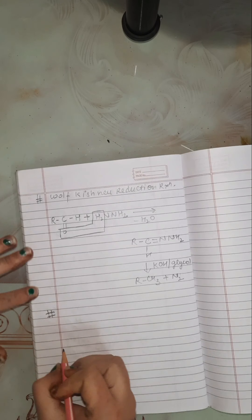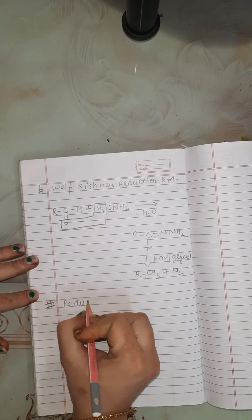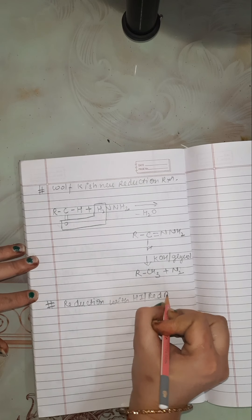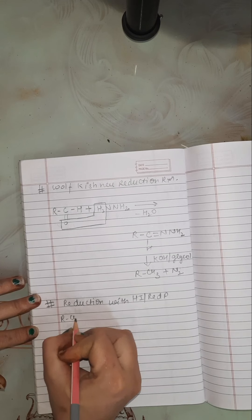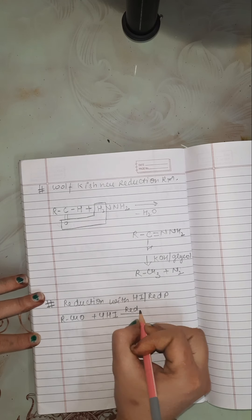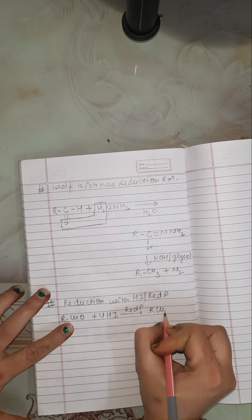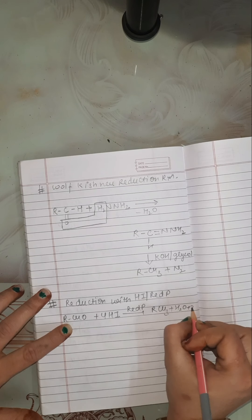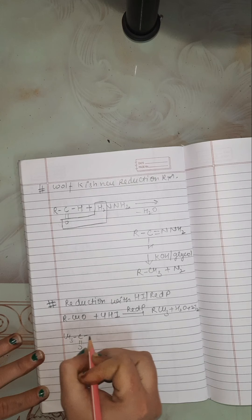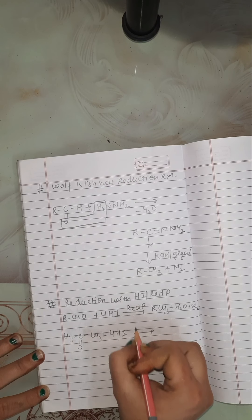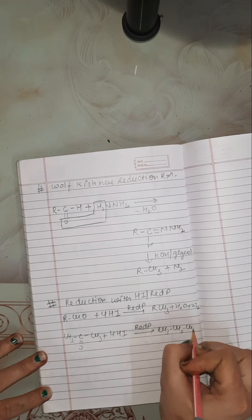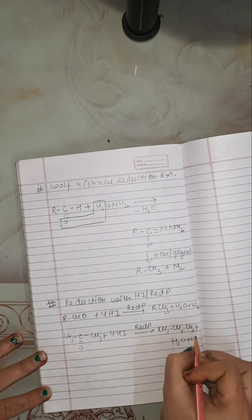Now let us do our next reaction, that is reduction with HI and red phosphorus. Take an aldehyde and react it with 4 molecules of HI in the presence of red phosphorus; it gives RCH3 plus H2O plus 2I2. Similarly, if we have a ketone and react it with 4 HI in the presence of red phosphorus, it gives an alkane plus water plus 2I2.